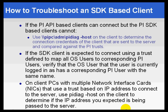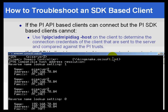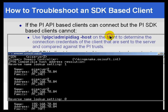Here are a couple of tips on troubleshooting an SDK-based client — SDK-based clients would be things like ProcessBook and DataLink, the newer versions. If you have an API-based client that can connect, like an interface or older versions of ProcessBook, use PI Diag-host. It's normally located in the PI Admin directory. However, on a machine that's also running the PI Server, that directory doesn't exist — you actually launch it from the PI Admin directory, which is kind of an exception to the rule.